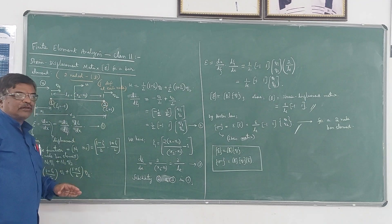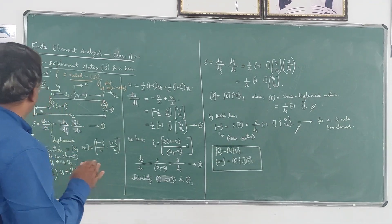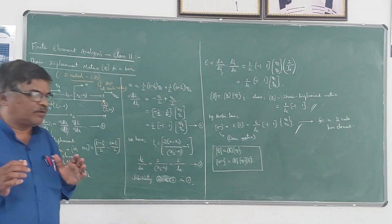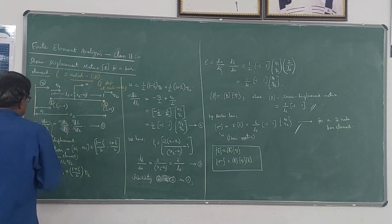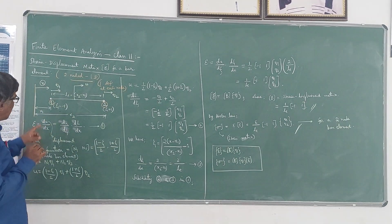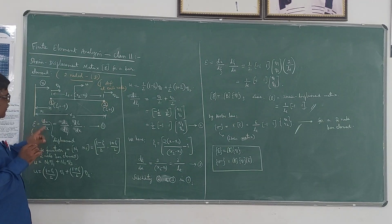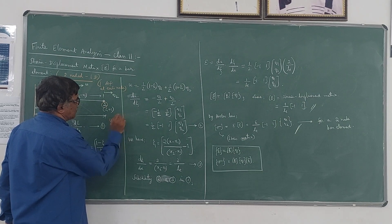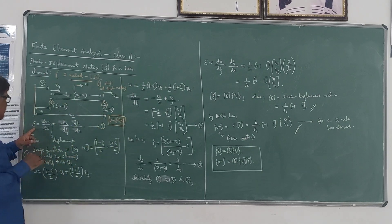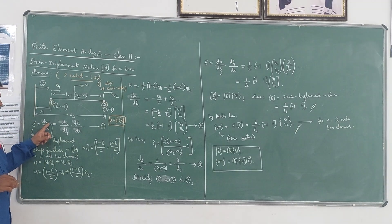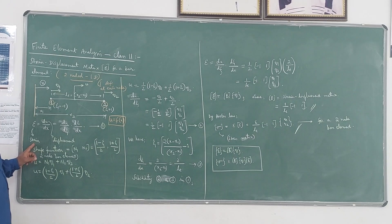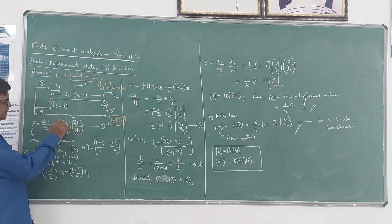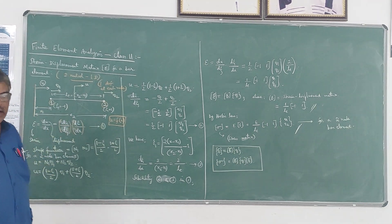Q1 and Q2 are the nodal displacements at nodes one and two. From the theory of elasticity, we know that strain epsilon is given by du/dx, where u is displacement. Since u is a function of x only in this one-dimensional element, we take the total derivative. Using the chain rule, this can be written as du/dζ multiplied by dζ/dx.